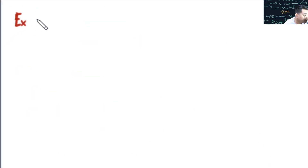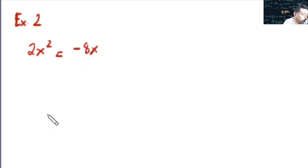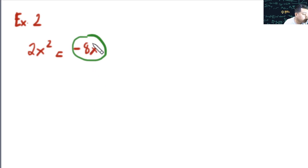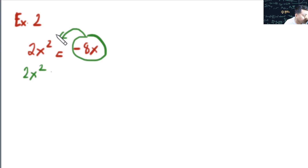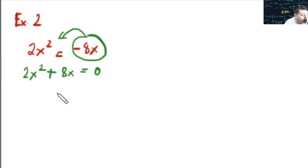Example number 2: we have 2x² = −8x. The given is not in standard form. We need to transpose negative 8x to the other side. Since it is negative, it becomes positive when transposed. So that becomes 2x² + 8x = 0. The highest power of the variable x is 2, so this is a quadratic equation.